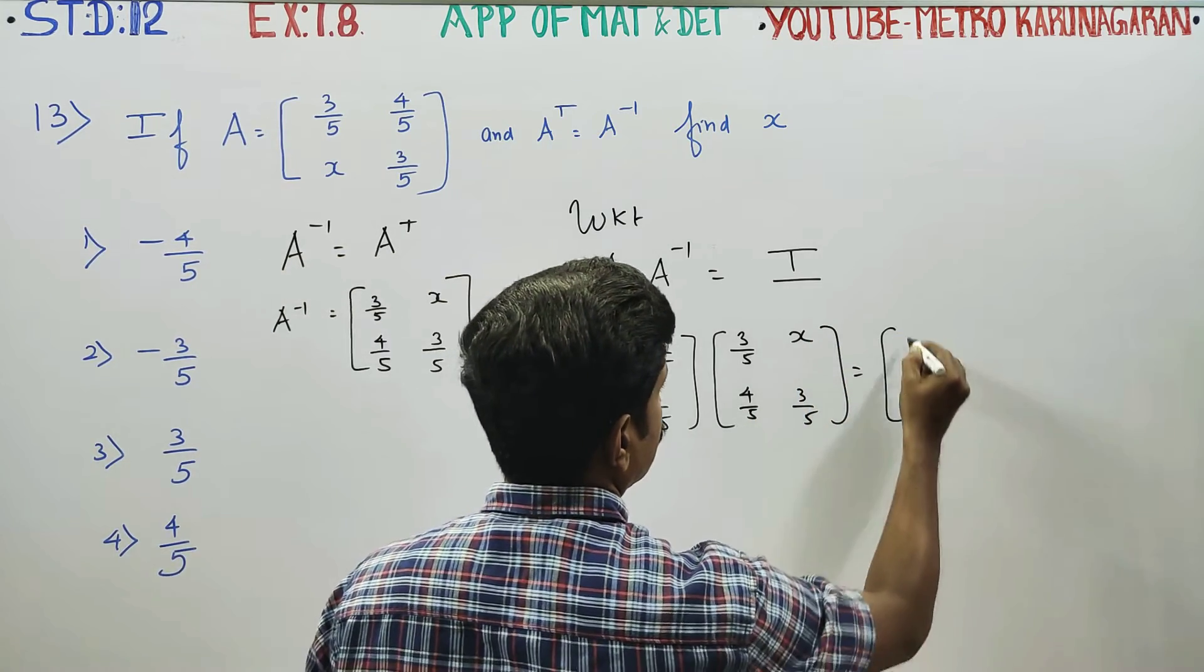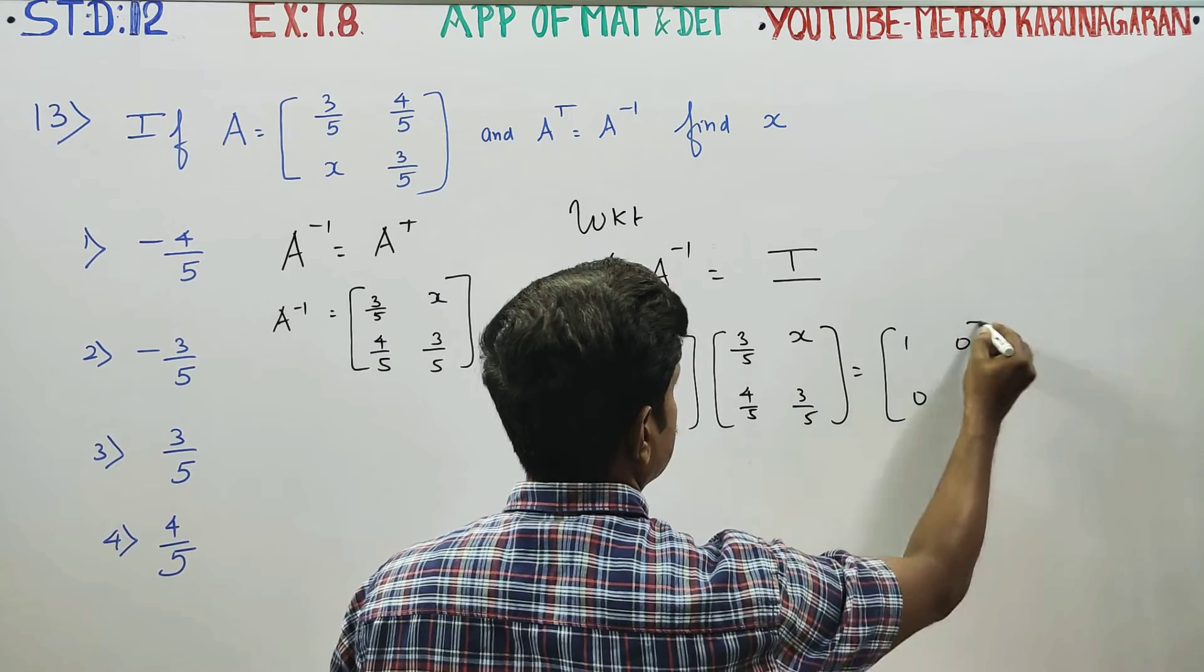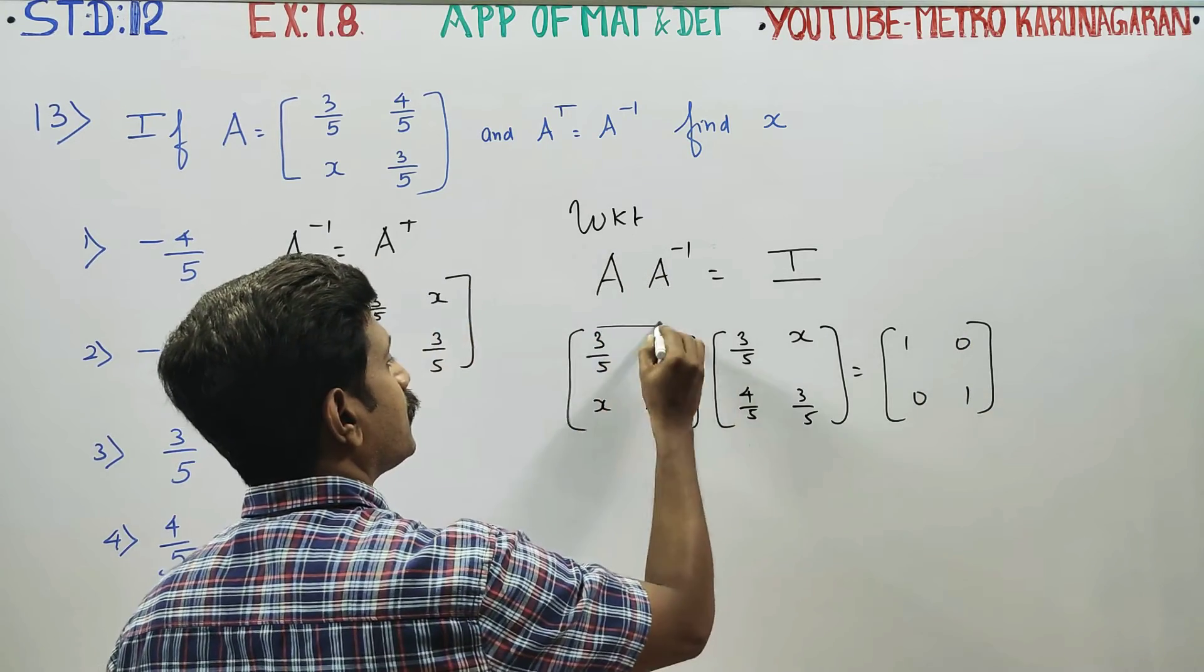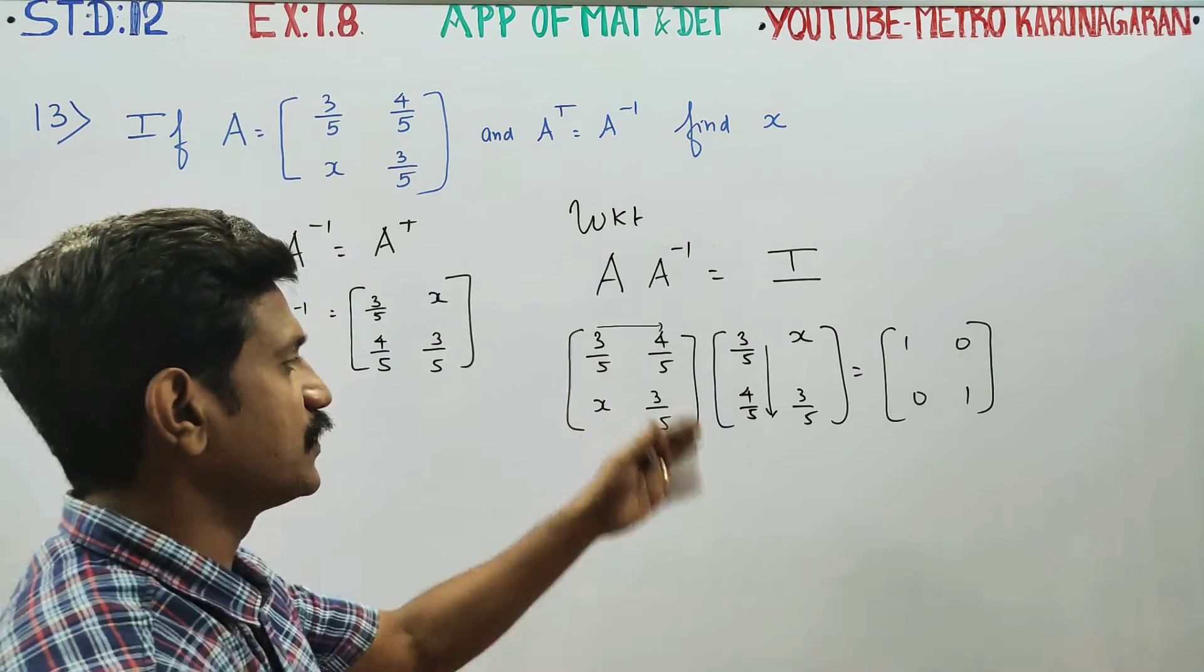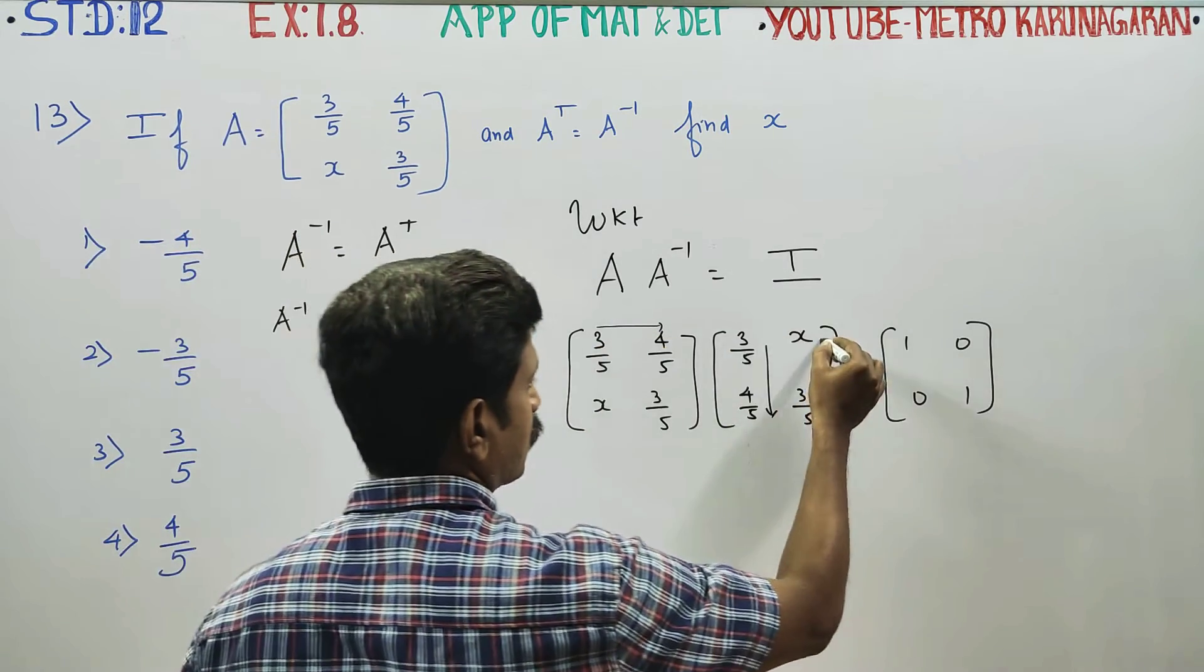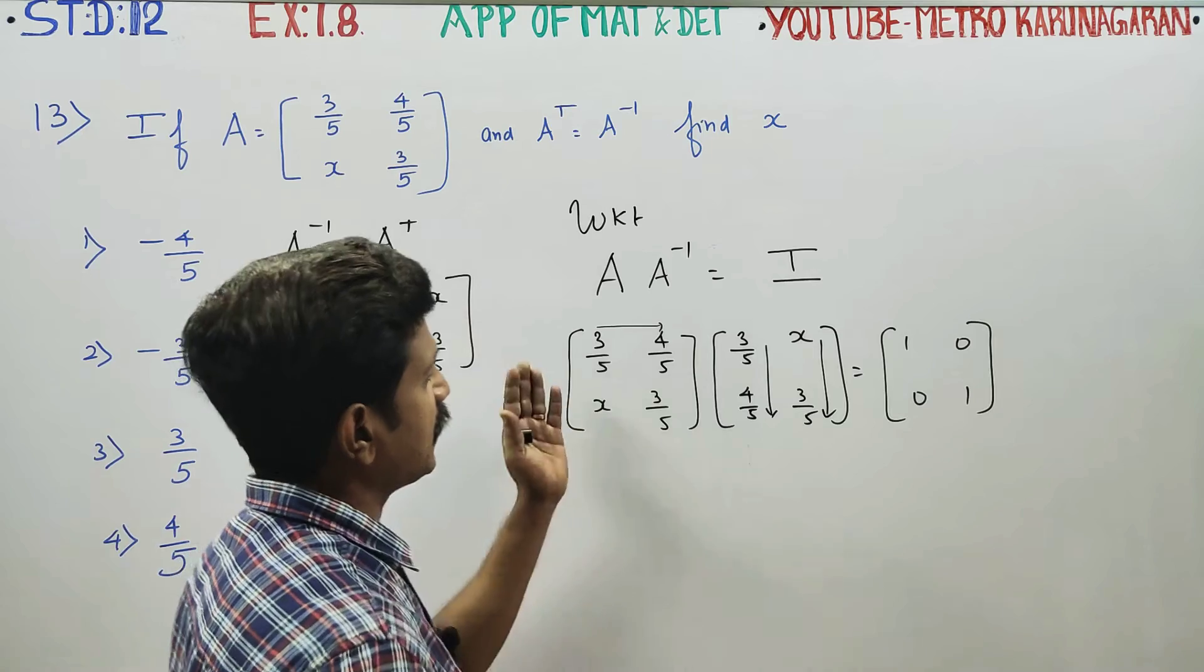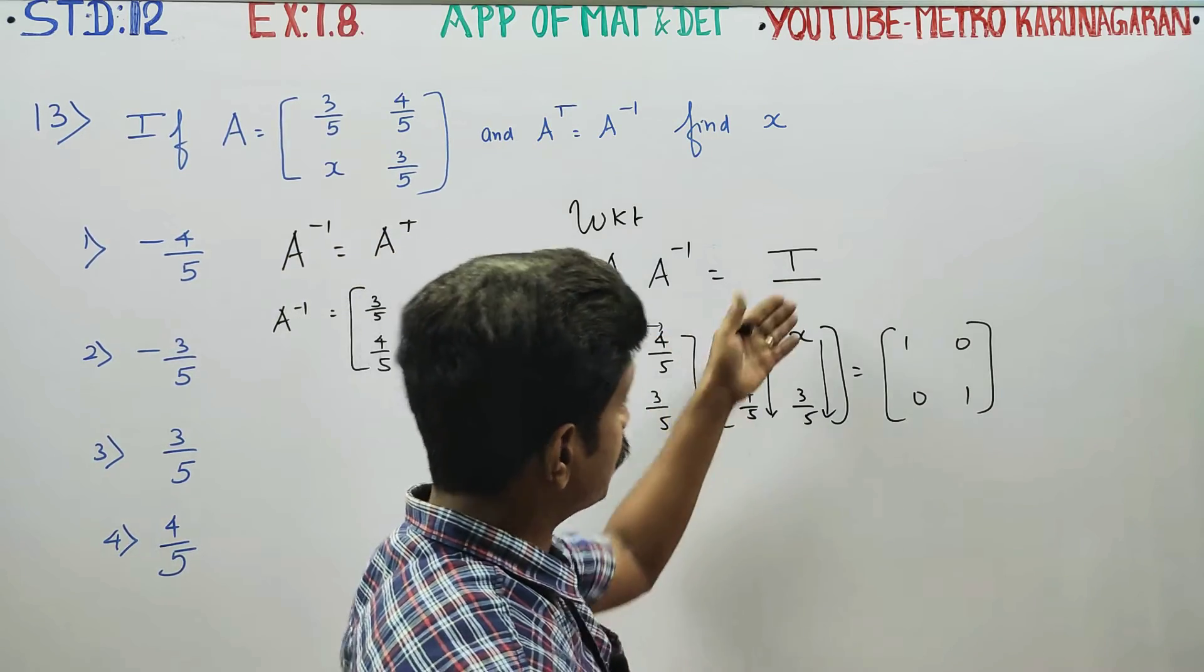2 by 2 order, and then you have to write 1, 0, 0, 1. Row into column. First row into first column, second row into second column.